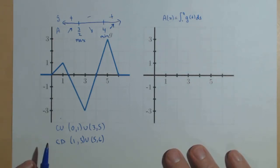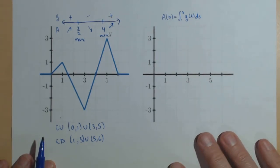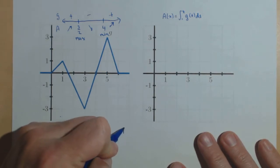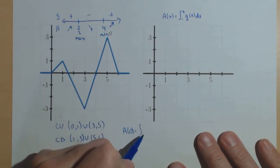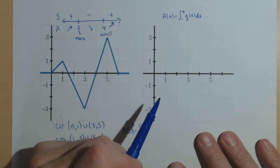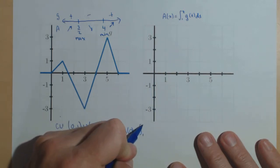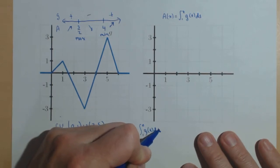So, we're going to check this all out by finding the values of a of 0 and some of the others. So, let's start with a of 0. Now, it's kind of interesting on this because we're starting at 1 on the lower limit instead of 0, g of t dt.